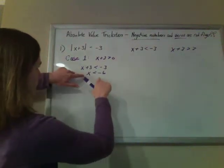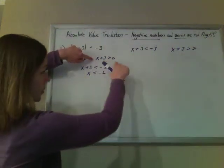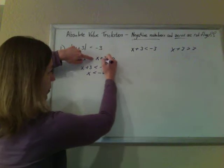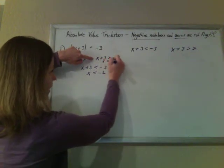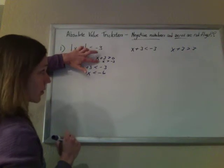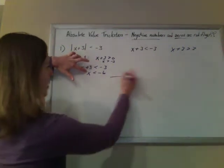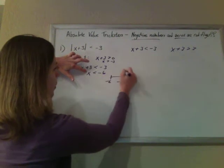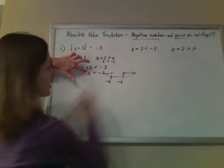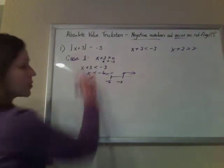But, let's see, if this idea for case 1 is true, if x plus 3 is greater than 0, that means that x is greater than negative 3. But x can't be greater than negative 3 and less than negative 6 at the same time. You cannot be greater than negative 3 and less than negative 6.